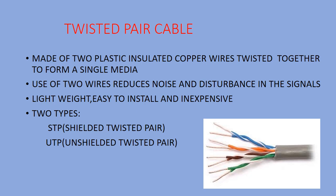There are two types of twisted pair cable. STP — shielded twisted pair — where there is a protective shield on top, and UTP — unshielded twisted pair — where there is no shield. These are the two types of twisted pair cables.